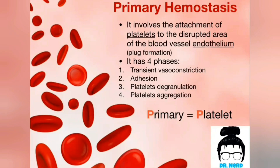Primary hemostasis mainly involves the platelets. They are attached to the disrupted area in the blood vessel in order to form a block. A way to remember this is that the P in primary points to the P in platelets. Primary hemostasis is divided into four phases: vasoconstriction of the blood vessel, adhesion of the platelets, platelet degranulation, and platelet aggregation where they stick together.